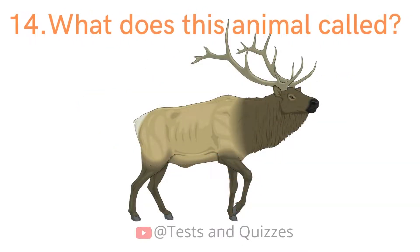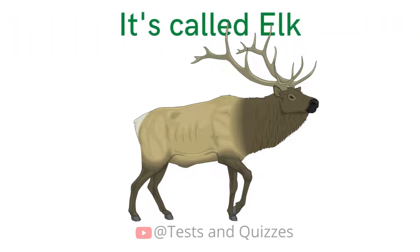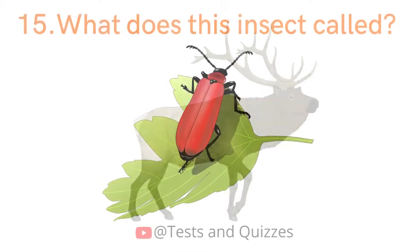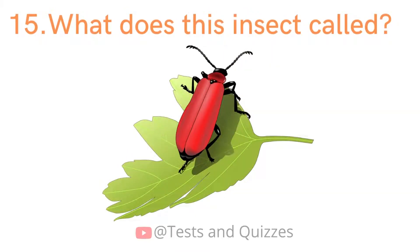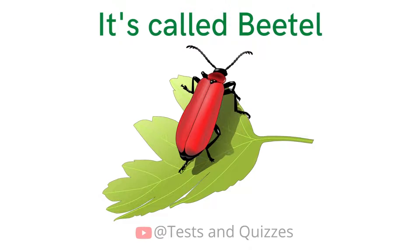What does this animal call? It's called Elk. What does this insect call? It's called Beetle.